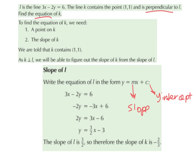We start by bringing the 3x over the equal sign, so it becomes minus 3x. We have minus 2y equals minus 3x plus 6. Now we change the signs of the entire equation: minus 2y becomes 2y, minus 3x becomes 3x, and plus 6 becomes minus 6. To get y on its own, we divide across by 2. So 3x divided by 2 is 3 over 2x, and minus 6 divided by 2 is minus 3.